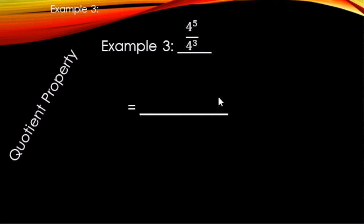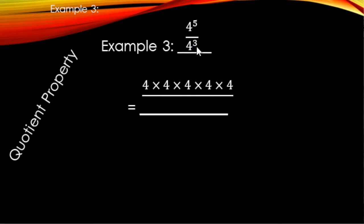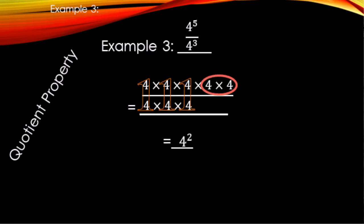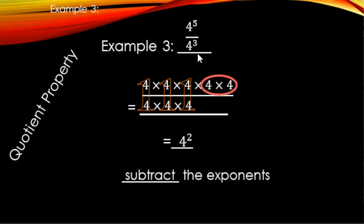Now the quotient property. The numerator has five 4s being multiplied — 4 to the fifth — and the denominator has three 4s — 4 cubed. Three of the 4s cancel (each becoming 1), leaving two 4s remaining, giving 4 squared. So with the same bases in a fraction, we subtract the exponents: 5 minus 3 equals 2.